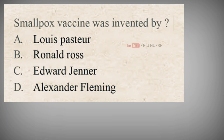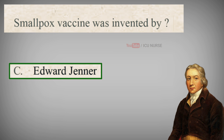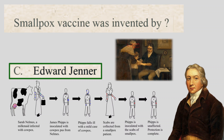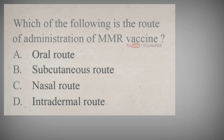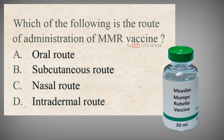Smallpox vaccine was invented by? A. Louis Pasteur, B. Ronald Ross, C. Edward Jenner, D. Alexander Fleming. The correct answer is C. Edward Jenner. English doctor Edward Jenner noticed that milkmaids who had gotten cowpox were protected from smallpox. Jenner also knew about variolation and guessed that exposure to cowpox could be used to protect against smallpox.